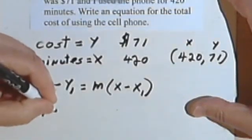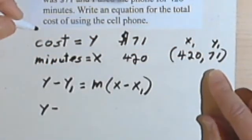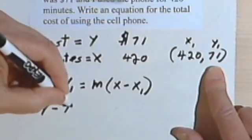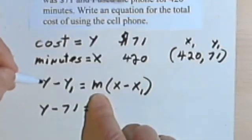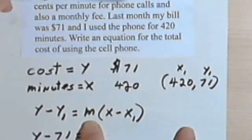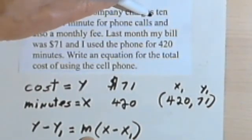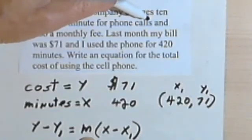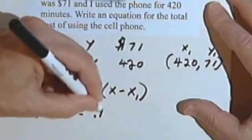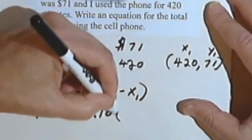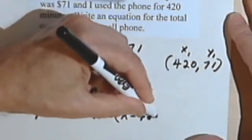Okay, we've got y minus... So here I've got an x sub 1 and a y sub 1. So I'm going to plug in the y sub 1 over here, that's 71. That's going to equal, let's see, m. So m is... What other information do I have here? Oh yeah, they charge 10 cents per minute. Okay, so if they charge 10 cents per minute, that's going to be the slope. So for 10 cents I'm going to write 0.10 times x minus x sub 1, 420.